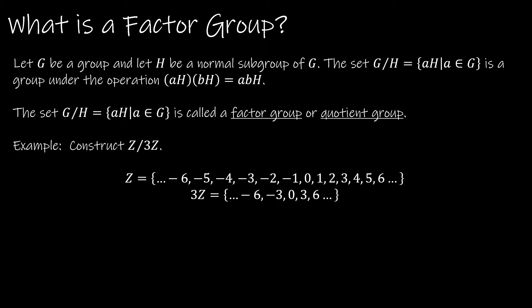So what exactly is a factor group? If H is a normal subgroup of G, then we have the set G mod H. G mod H is essentially the set of all the cosets, left or right, and it is a group under the operation AH·BH equals ABH. We'll see that look differently based on whether the operation is additive or multiplicative.